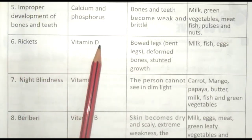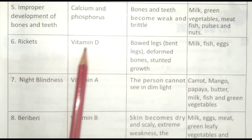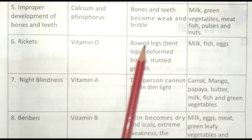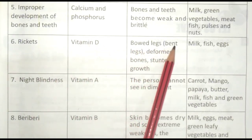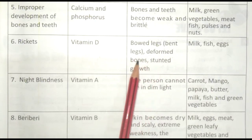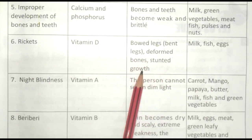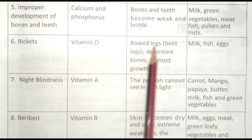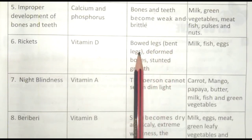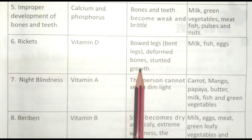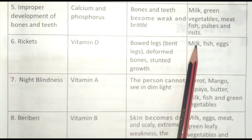Rickets — Sukharug. This disease is caused by deficiency of Vitamin D — Vitamin D ki kami se ye bimari hoti hai. Symptoms include: Bowed Legs, Bent Legs, Deformed Bones, Stunted Growth — Jhuke hue pair, Mode pair, Vikrit haddiyaan, Avikasit hui vriddhi.